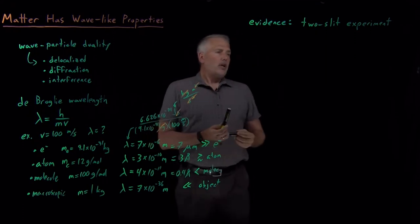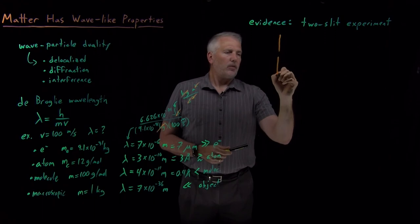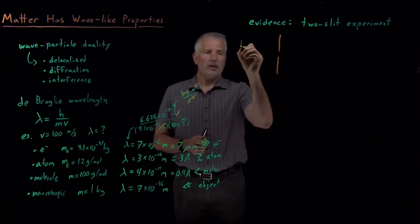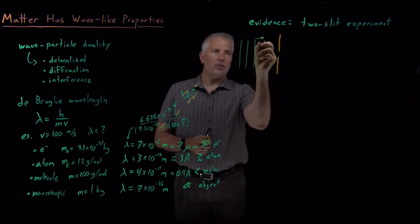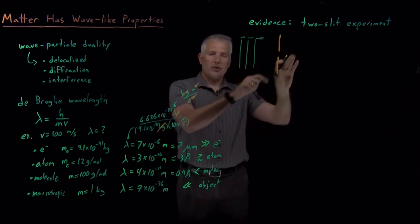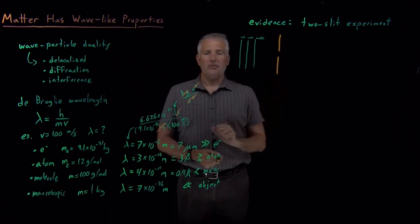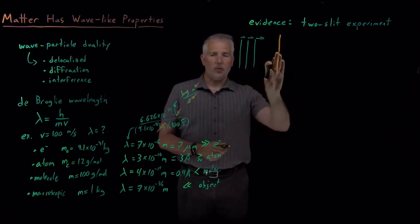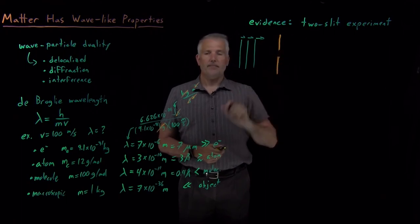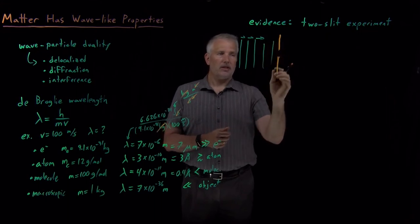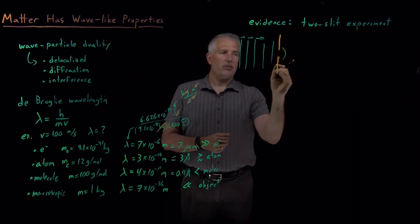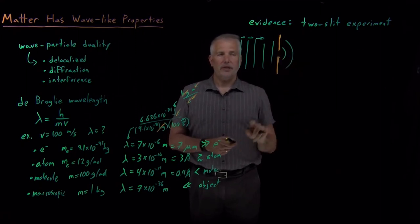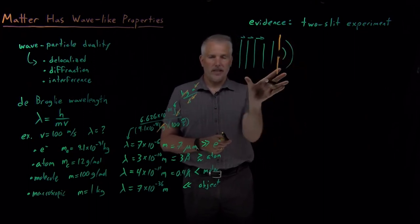To start, I'll describe what a one-slit experiment looks like for waves. Imagine a wave like a wave in the ocean — a top view of a line of waves moving toward shore, and before they reach shore they encounter a wall with a gap in it. If the wall were solid, the waves would crash into it and not pass. But when there's a slit in the wall, the waves pass through that opening, diffract around it, and move out in circular ripples — the same pattern you'd see if you threw a rock into a pond.